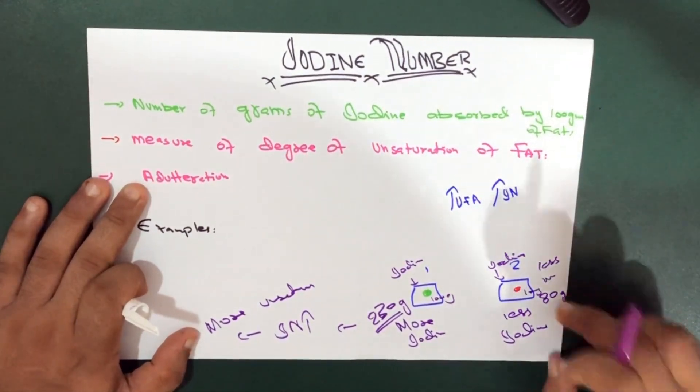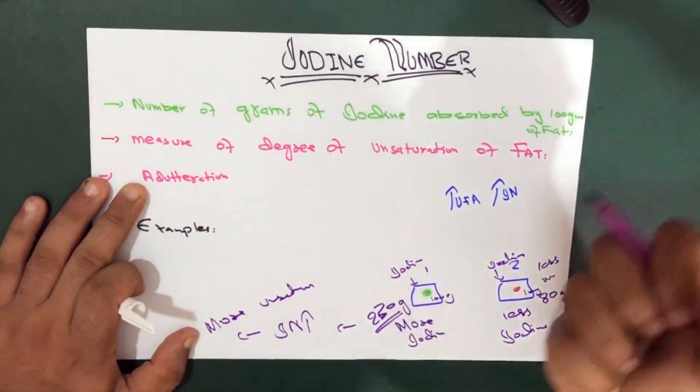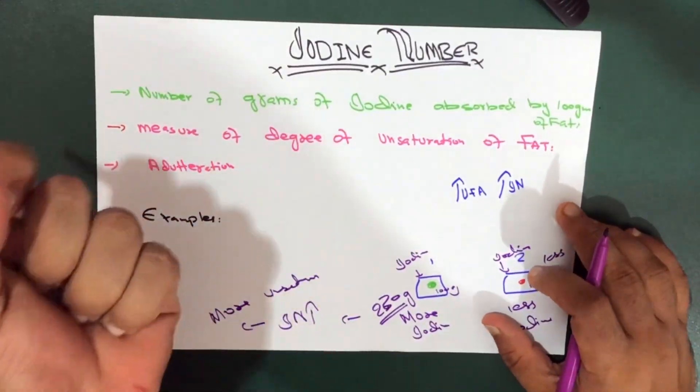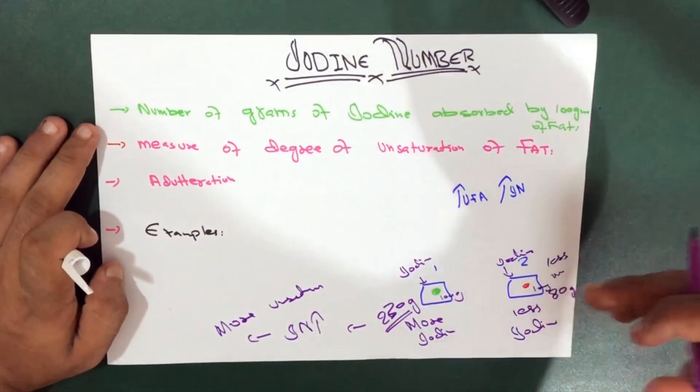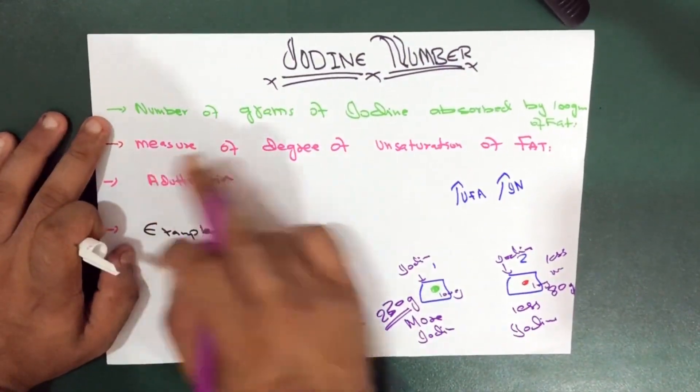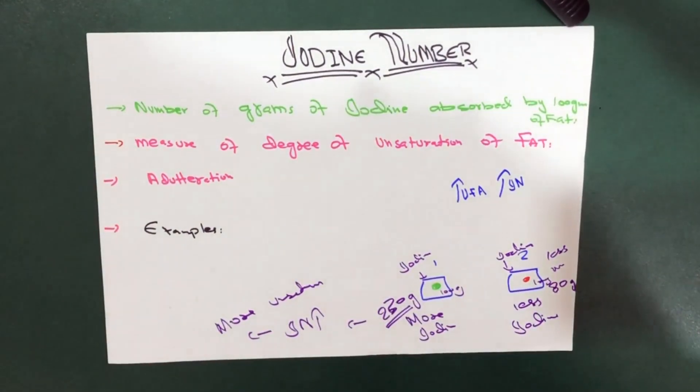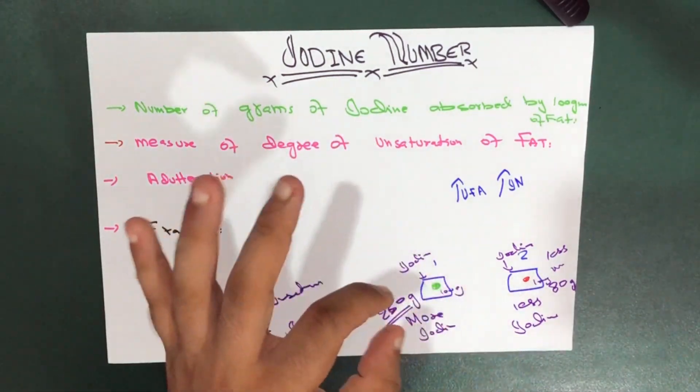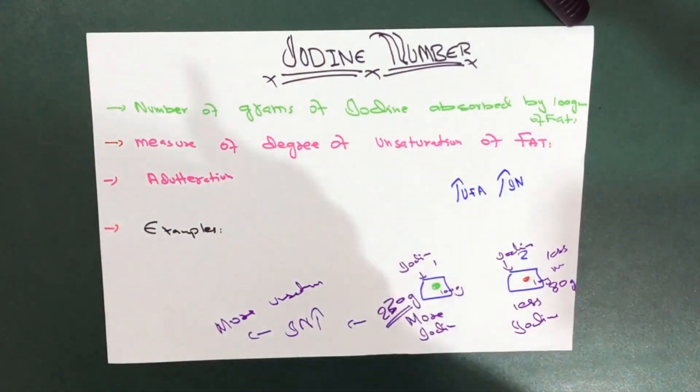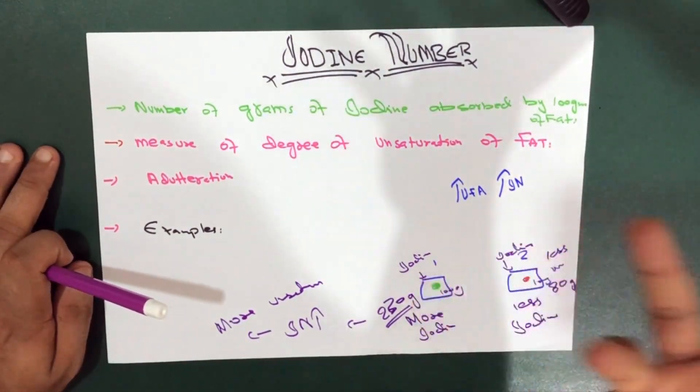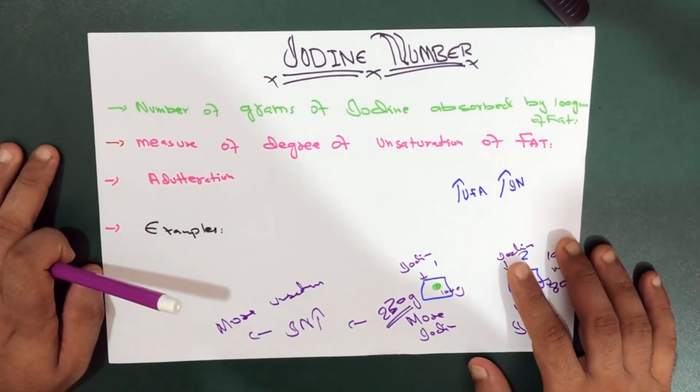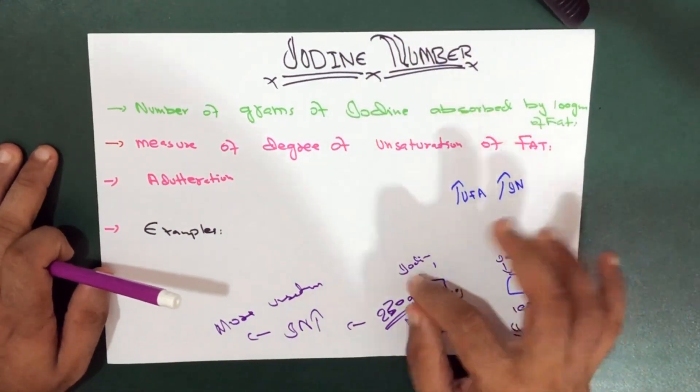Less iodine absorption means there are less double bonds, so this is less unsaturated. We can say that unsaturated fatty acids absorb iodine at their double bonds. Therefore, as the degree of unsaturation increases, iodine number also increases, and hence biological value of the fat increases.